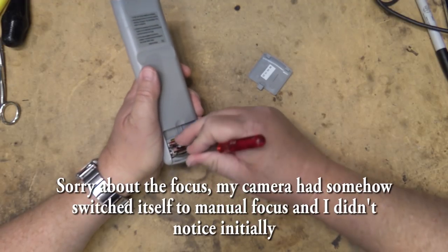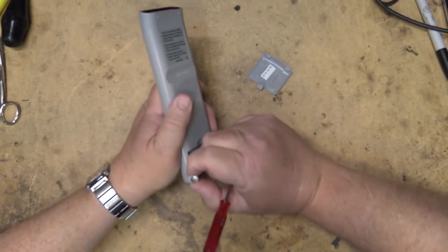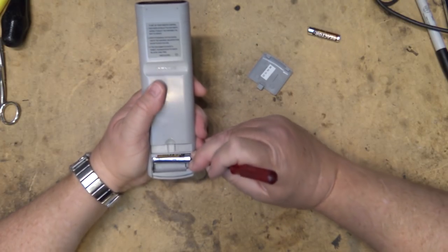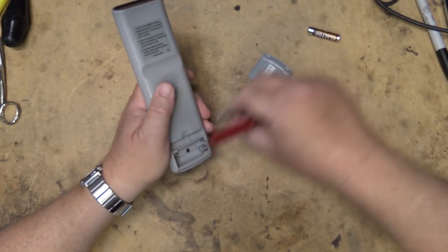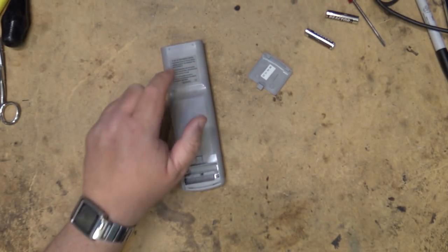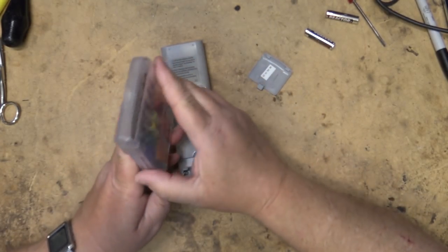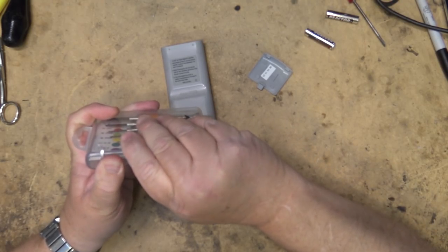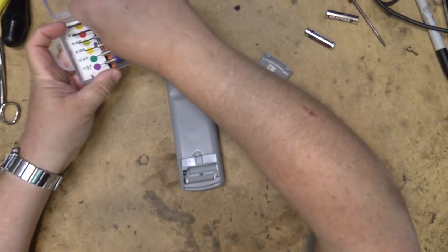Now this applies to pretty much any remote control because all of these remotes are built the same way. They use a rubber keypad with carbon pads on it that press down on the circuit board, and they wear out or more often than not get dirty.